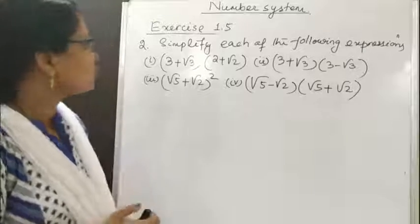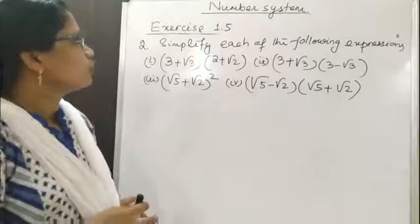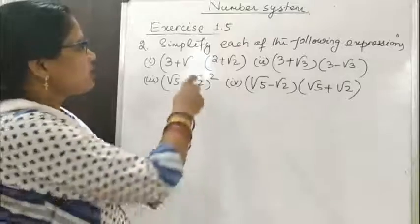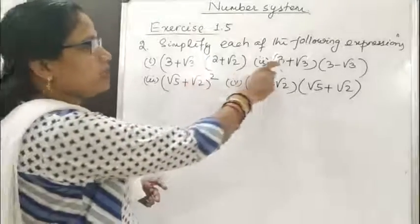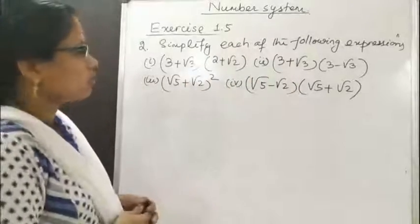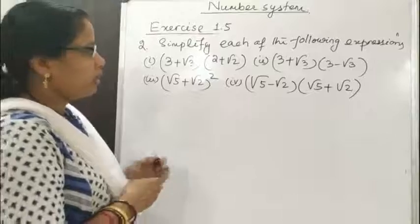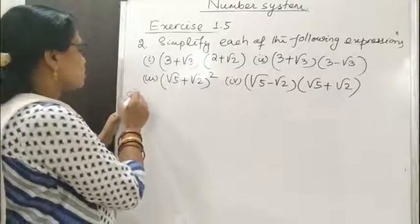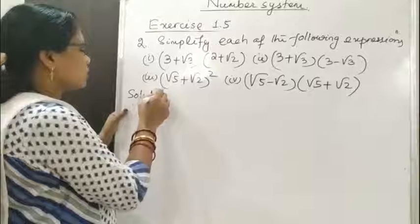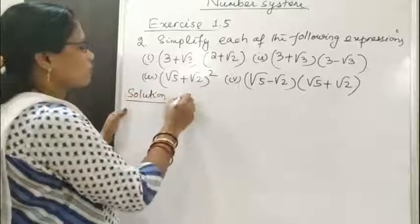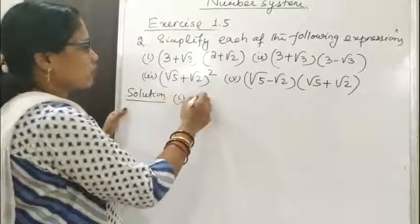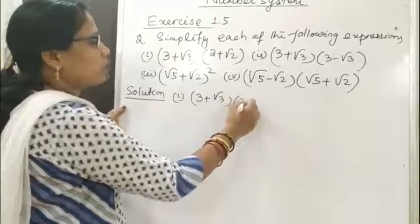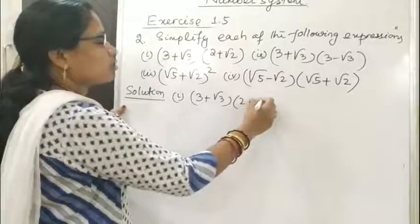Let us solve Question number 2 of Exercise 1.5. The question is: simplify each of the following expressions. The first one is (3 + √3) multiplied with (2 + √2).